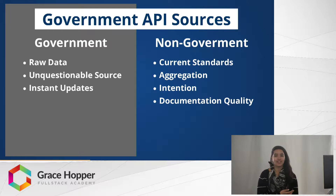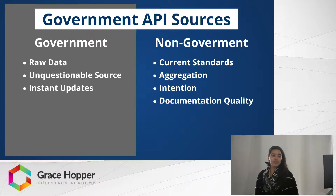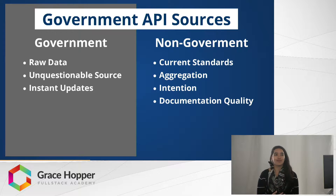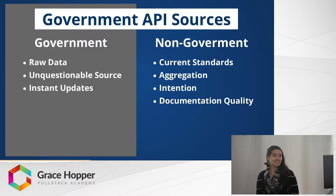Most government APIs give you data in an XML format as opposed to a JSON format, which I think everyone in this room is more used to working with. There's also the intention of someone who's a non-governmental source providing this data — they want to do it, they're trying to fill a need. Therefore the docs in general are a little better because it's coming from a place of love or desire, as opposed to this is just my job and I have to do this.